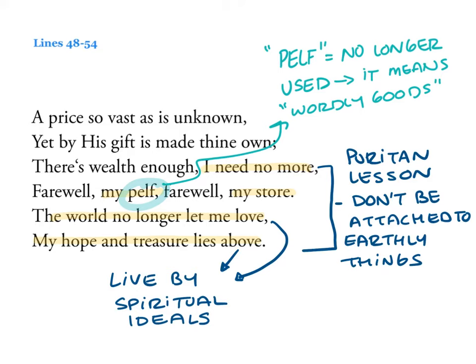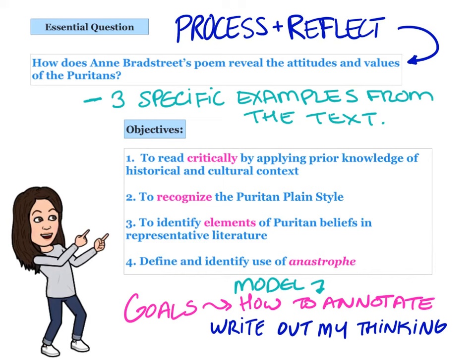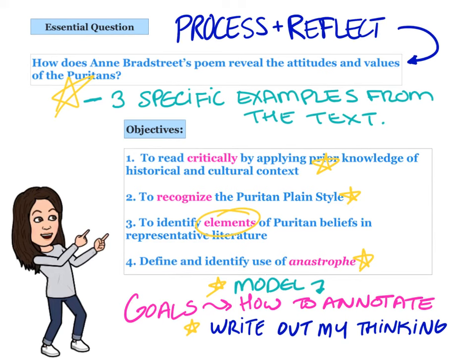Now that we've gone through this whole poem, let's process and reflect on the essential question and the objectives from the beginning of this presentation. You should be able to find at least three specific examples from the text that show how Anne Bradstreet's poem reveals the attitudes and values of the Puritans. We've applied prior knowledge of Puritan culture and history, looked at examples of the Puritan plain style, identified elements of Puritan beliefs, and identified uses of anastrophe. My goal was to model how to annotate a Puritan piece of literature and write out my thinking as I encounter the text. Now our goal as a class is to really get into the spirit of active reading and annotating all the works we read going forward. Thanks, Yoda.